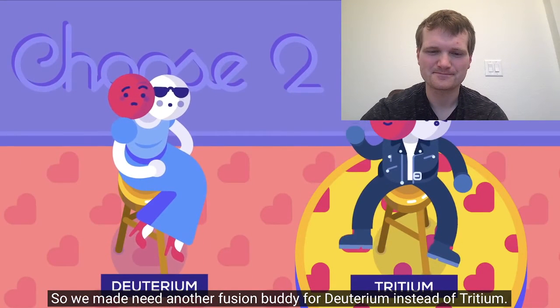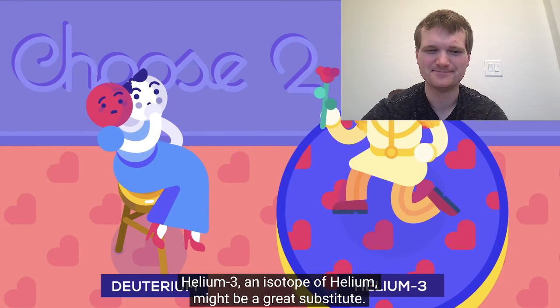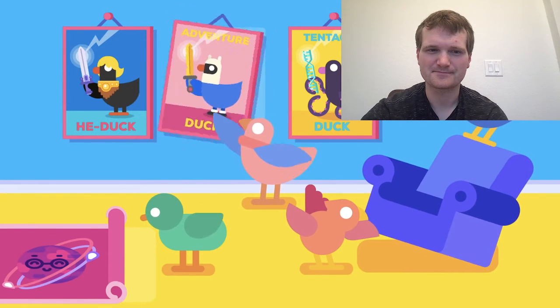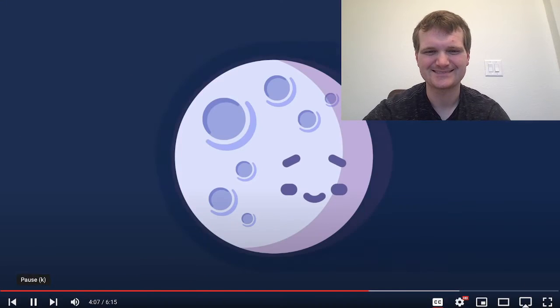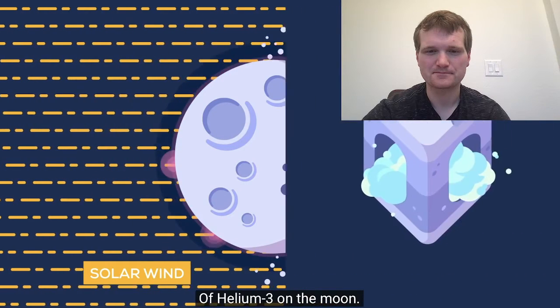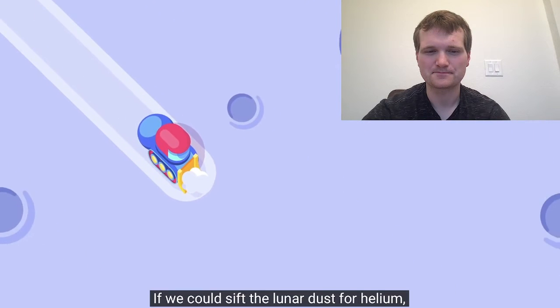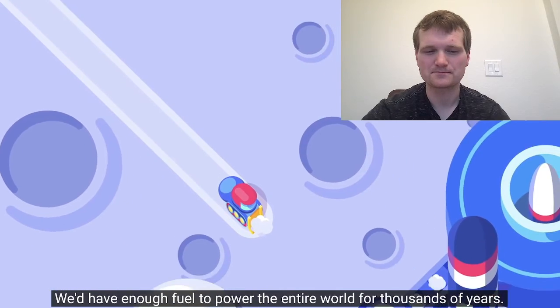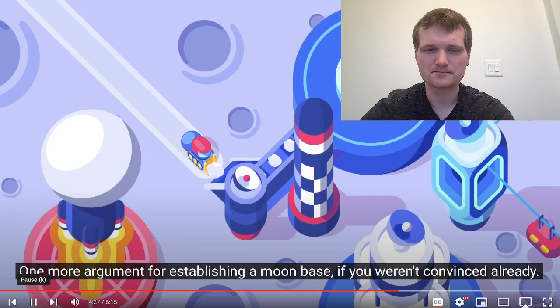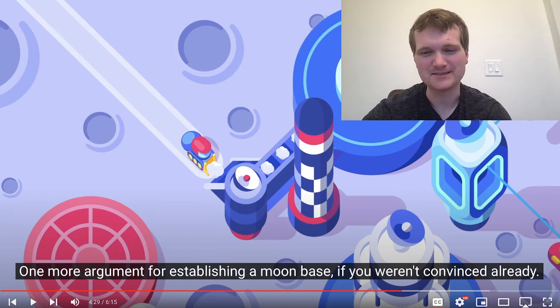So we may need another fusion buddy for deuterium instead of tritium. Helium-3, an isotope of helium, might be a great substitute. Unfortunately, it's also incredibly rare on Earth. But here, the Moon might have the answer. Over billions of years, the solar wind may have built up huge deposits of helium-3 on the Moon. Instead of making helium-3, we can mine it. If we could sift the lunar dust for helium, we'd have enough fuel to power the entire world for thousands of years. One more argument for establishing a Moon base, if you weren't convinced already. There's a lot of sci-fi out there about mining helium-3 on the Moon. It's interesting.